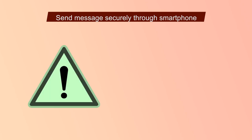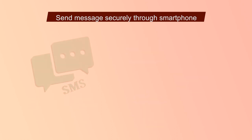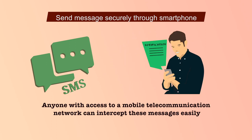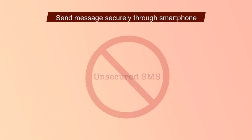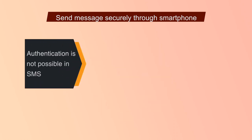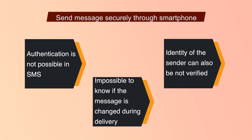Now let us discuss how to send messages securely through your smartphone. You should use precautions when sending SMS and using instant messaging or chatting on your smartphones. SMS communication is insecure by default. Anyone with access to a mobile telecommunication network can intercept these messages easily, and this is an everyday occurrence in many situations. Don't rely on sending unsecured SMS messages in critical situations. There is also no way of authenticating SMS messages, so it is impossible to know if the contents of the message were changed during delivery or if the sender really is the person they claim to be.